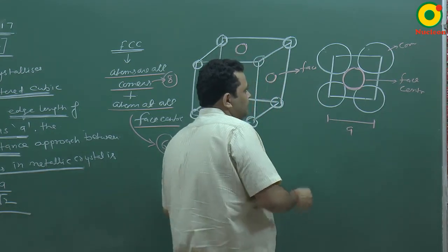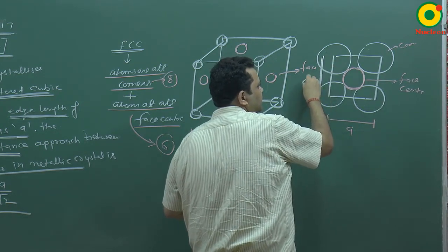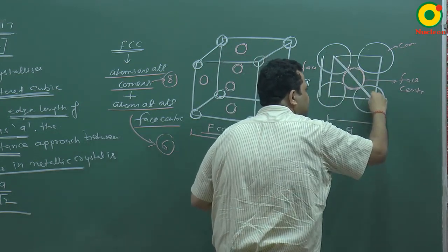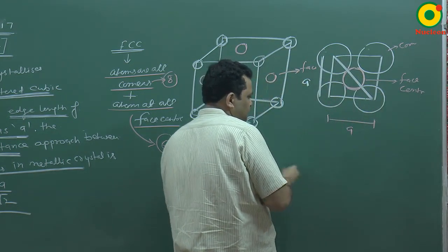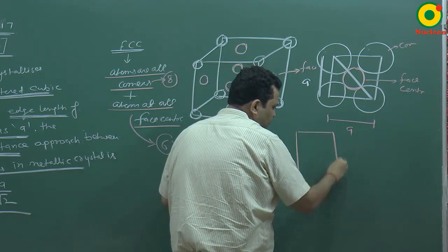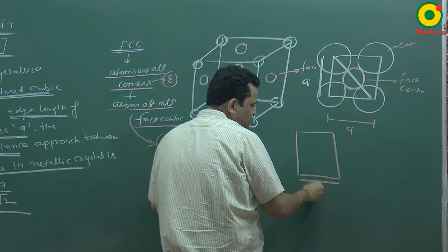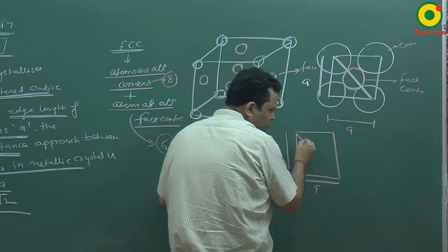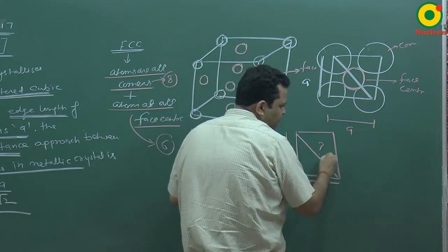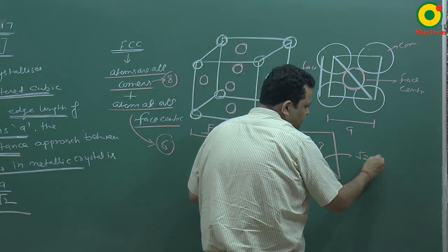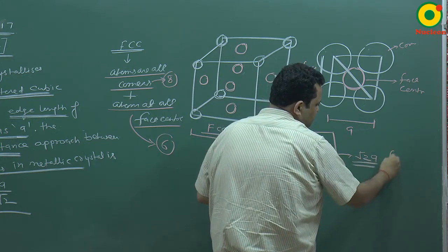If the edge length is a, then the edge length is a. If we solve this, this is a length and this is also a length. So this dimension will be root 2a. This is called the face diagonal.